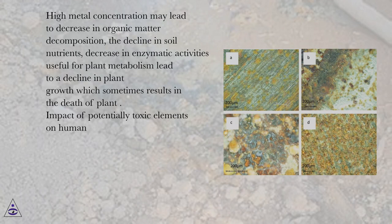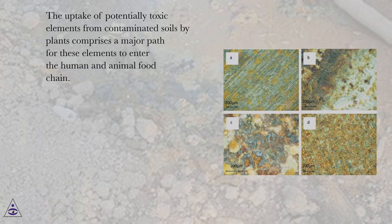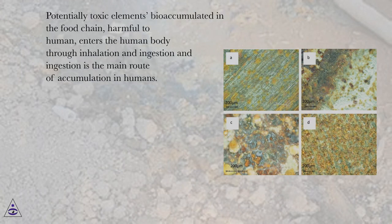Impact of Potentially Toxic Elements on Humans. The uptake of potentially toxic elements from contaminated soils by plants comprises a major path for these elements to enter the human and animal food chain. Potentially toxic elements bioaccumulated in the food chain are harmful to humans, entering the human body through inhalation and ingestion, with ingestion being the main route of accumulation.